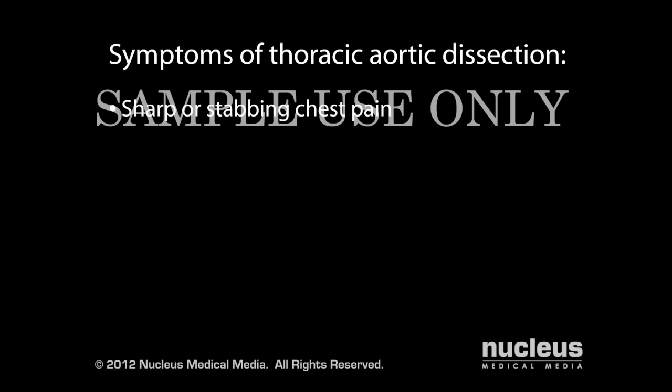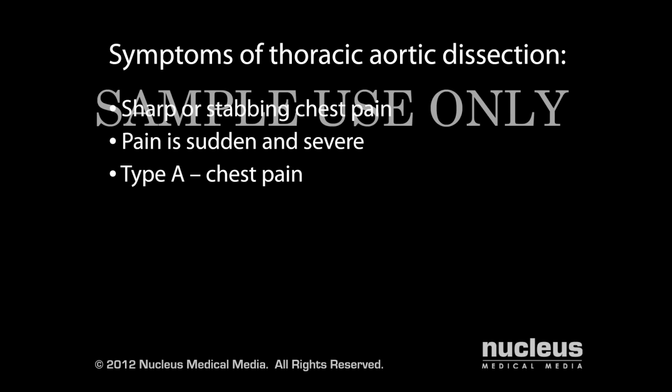The most common symptom of thoracic aortic dissection is sharp or stabbing chest pain, usually sudden and severe. If you have a Type A dissection, you're most likely to feel pain in your chest. If you have a Type B dissection, you're more likely to feel pain in your back than your chest. If you have these symptoms, you should seek immediate medical attention, as this condition can be life-threatening.